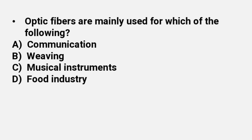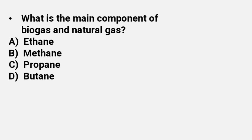Now next, what is the main component of biogas and natural gas? Ethane, methane, propane, or butane. Its correct answer is methane, CH4.